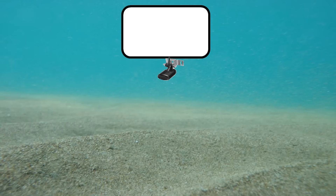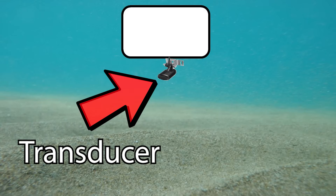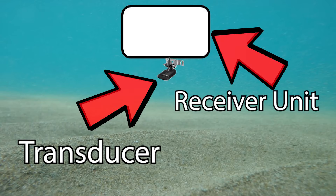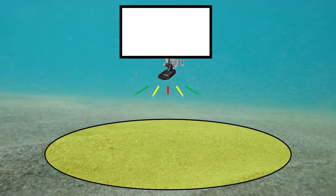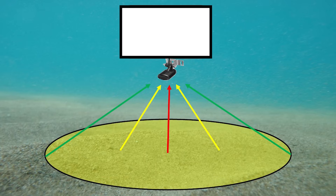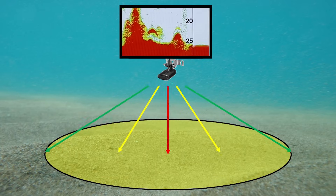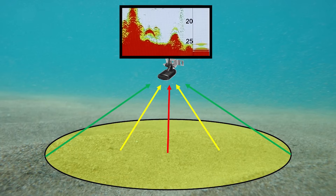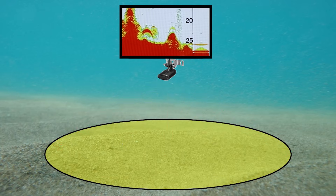Your fish finder consists of two major parts: the transducer and the receiver. The transducer sends sound waves through the water column. Once those sound waves hit an object, the sound wave returns back to the transducer. That sound wave data is then processed by the receiver unit and converted into the image you see on your fish finder screen.